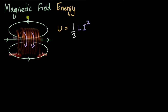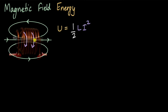Since we're interested in figuring out the magnetic field energy, we need to bring in the factor of B somehow in this equation. We know the inductor is basically a solenoid with current going through it, producing magnetic field lines of its own strength — and that could be a way of inserting the factor of B in our expression.